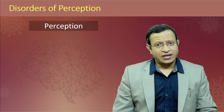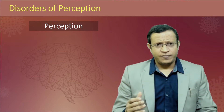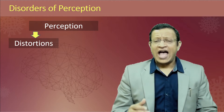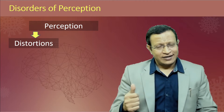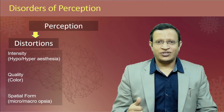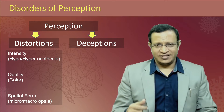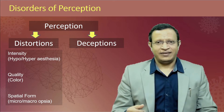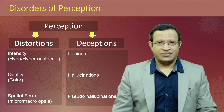Let us understand disorders of perception. Disorders of perception have been classified into two important categories: disorders of distortions and deceptions. Let us understand distortions.